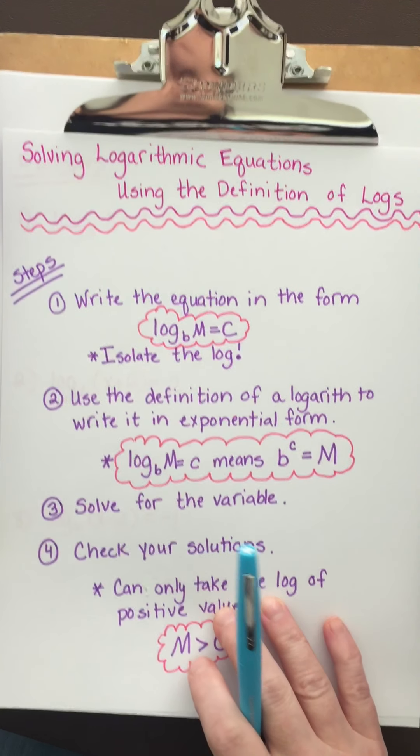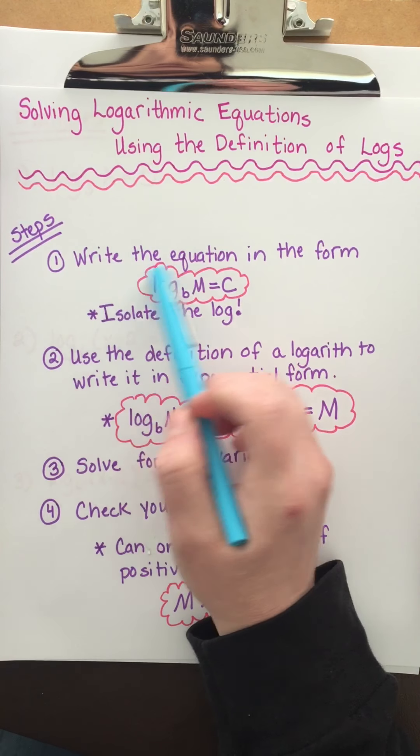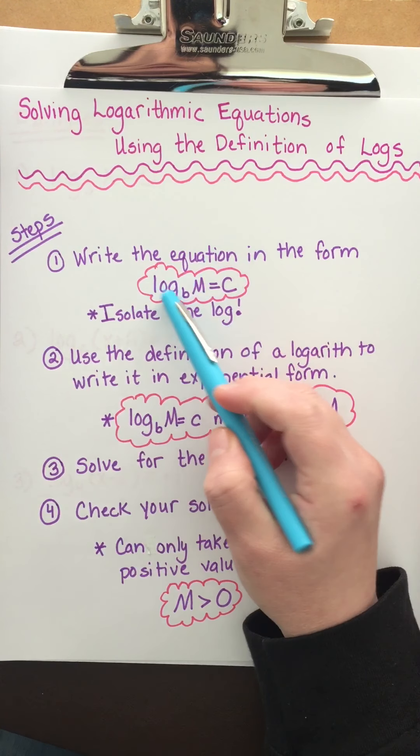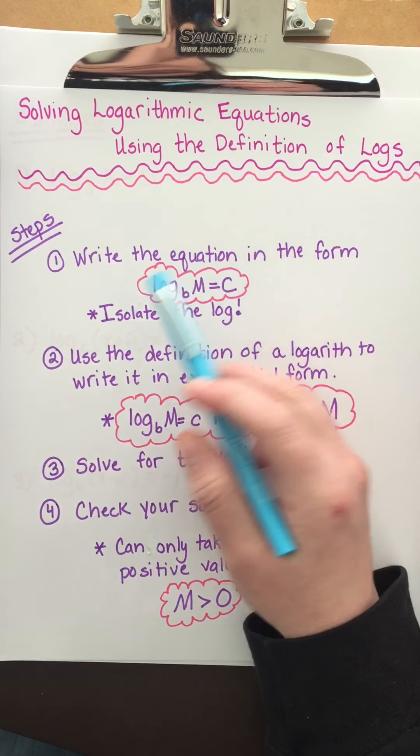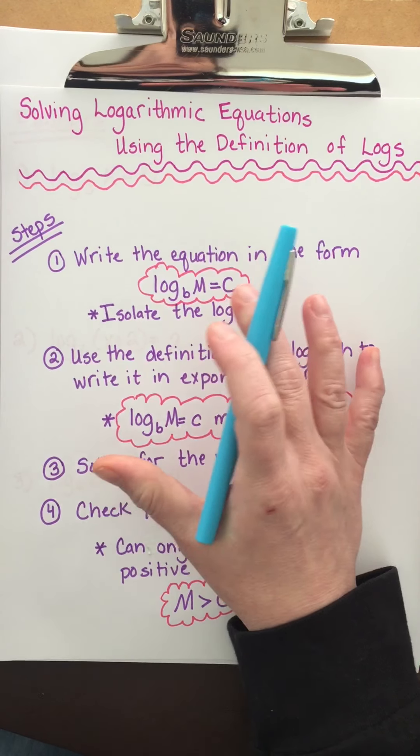There are four steps. The first thing you want to do is write the equation in the form log base b of m equals c, basically getting the log on a side by itself.